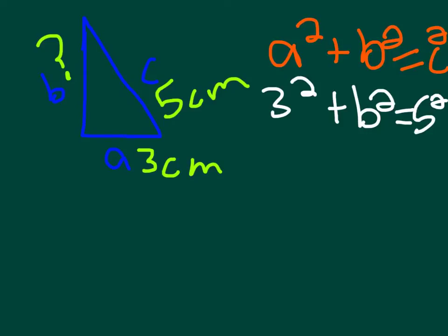Let's go ahead and square these numbers. 3 squared equals 9 plus b squared and 5 squared equals 25 and the difference between these two numbers will give us b squared.